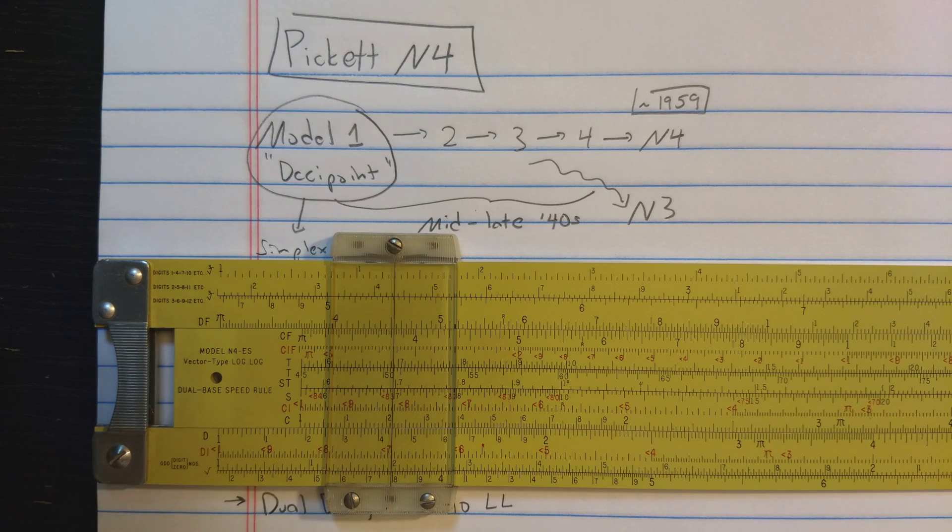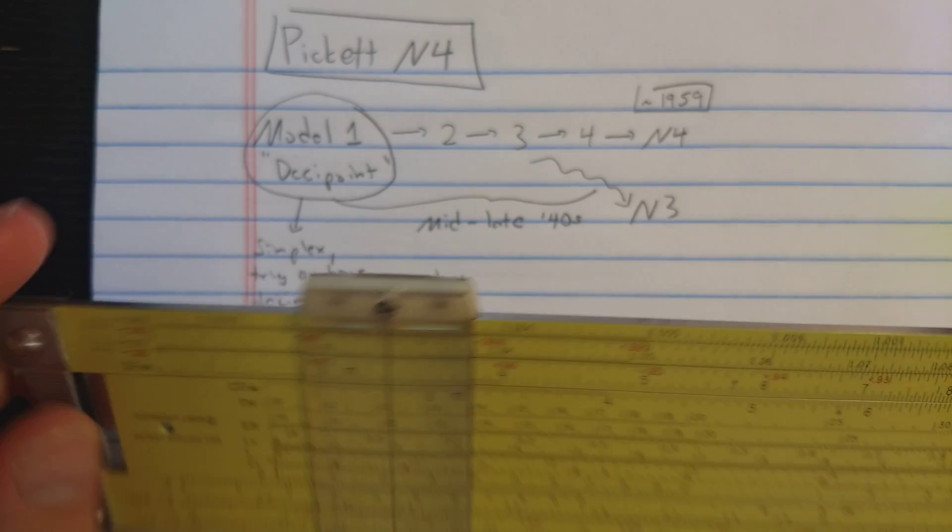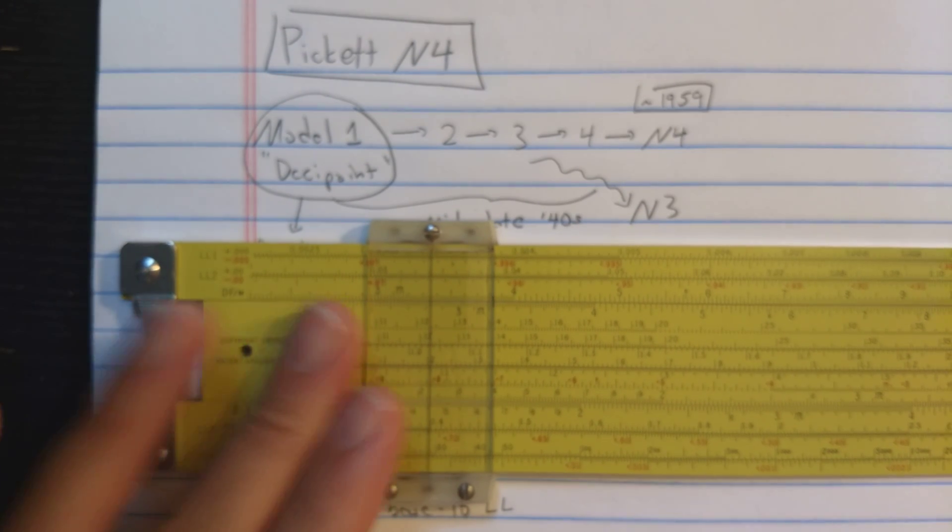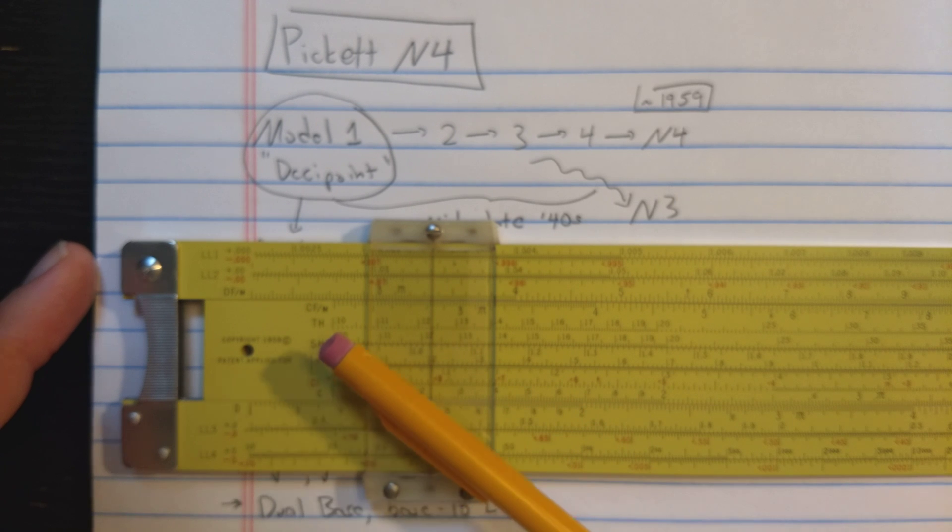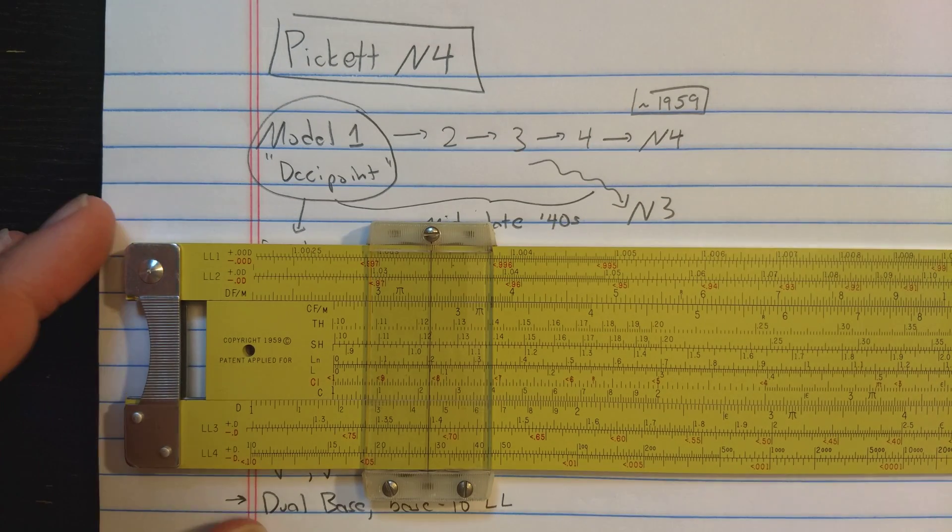The N4 is an interesting slide rule because it's the high end of Pickett's range. It's made through the end of the slide rule era, but it can trace its origin back to Pickett's early slide rules.